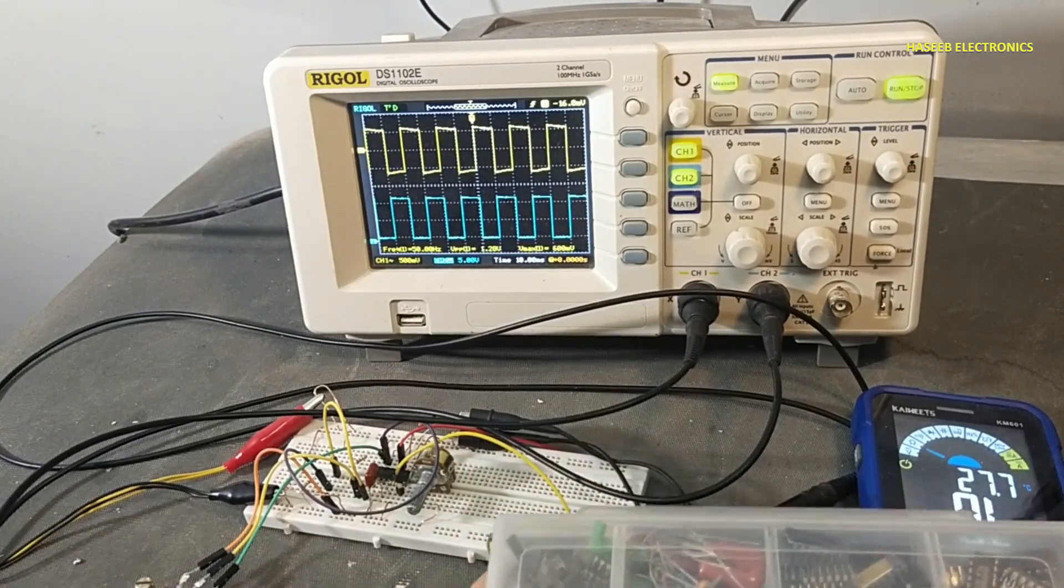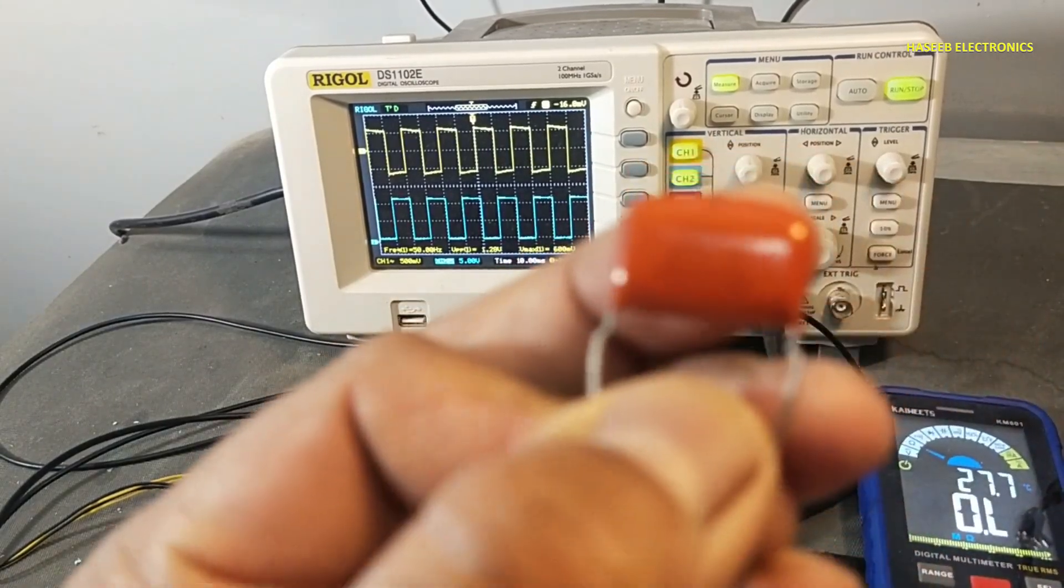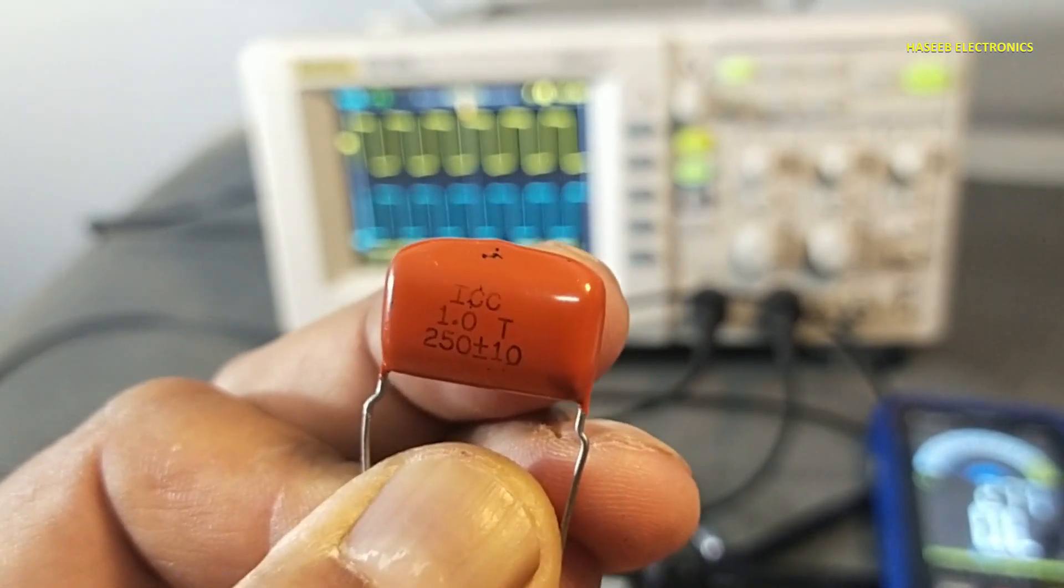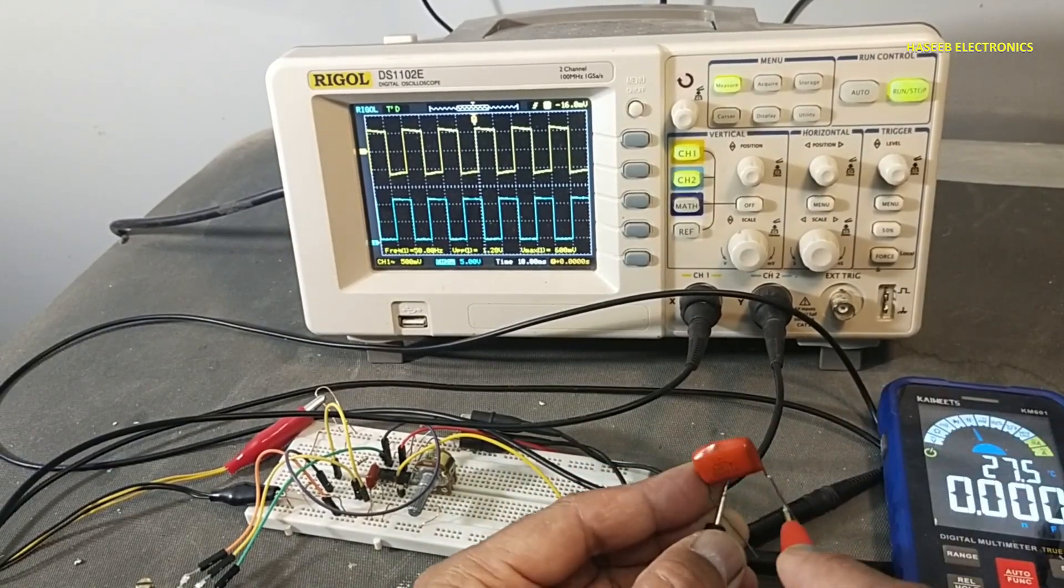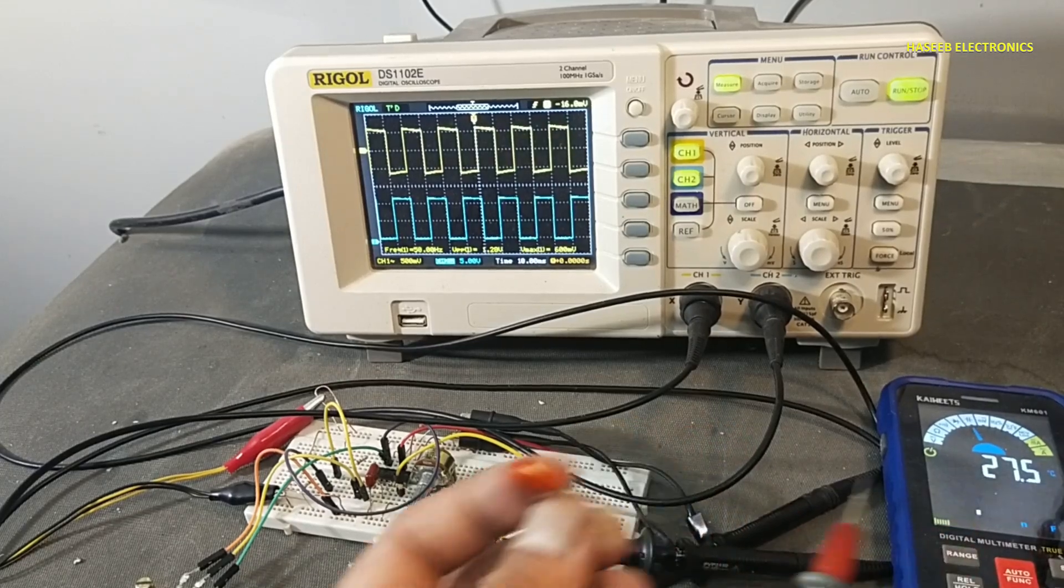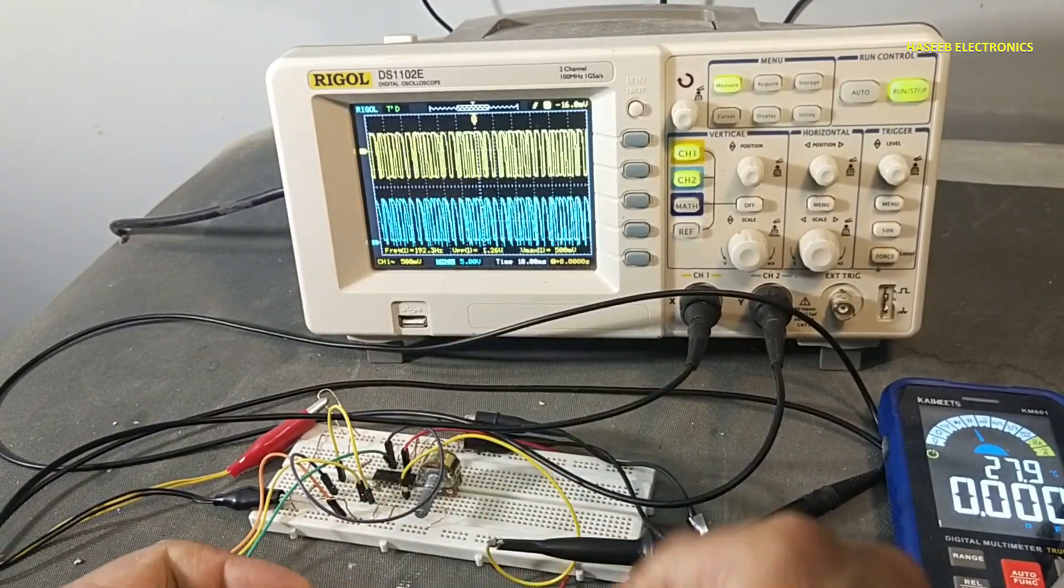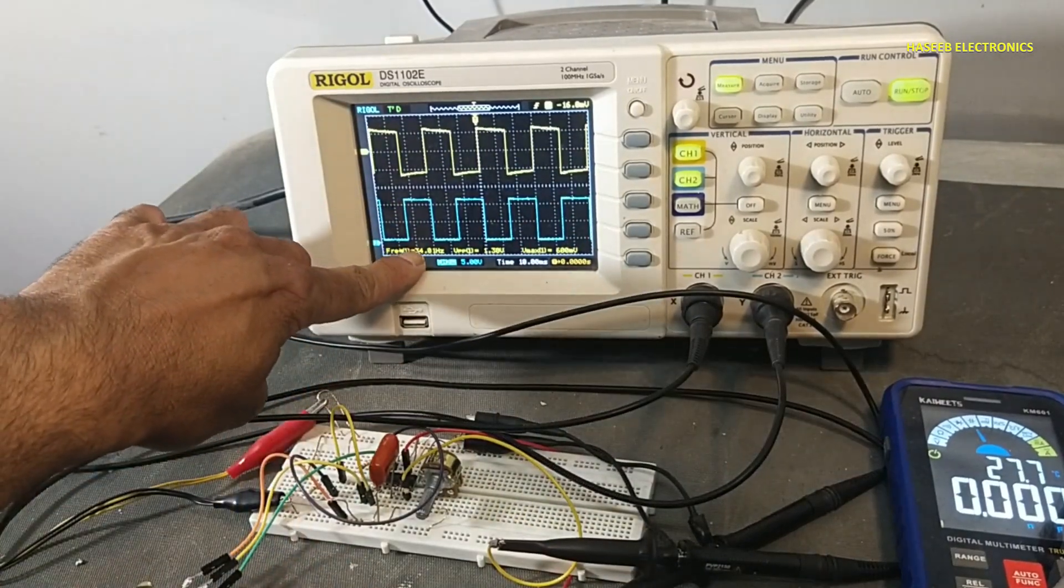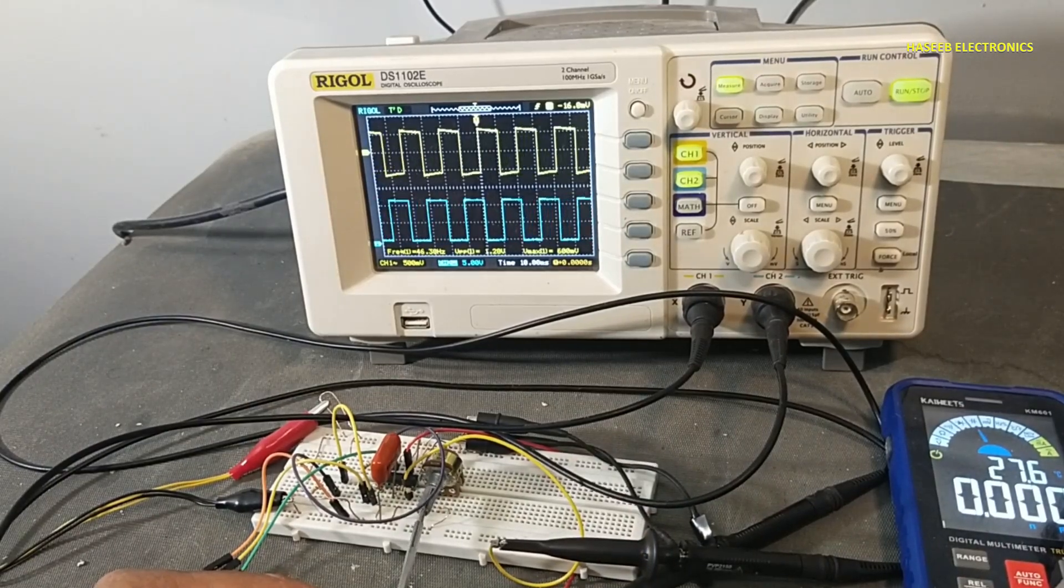Let's select one micro farad capacitor. Yes, it is one micro farad. Before this the capacitor value was 0.681 micro farad. It is exactly one micro farad. Now when I will increase this capacitor size, now we can see the frequency has now dropped, 33 hertz at each channel. We can adjust frequency from this.